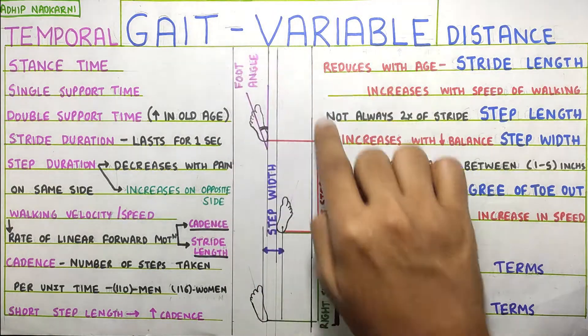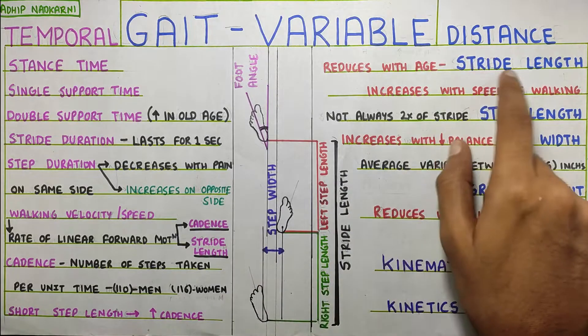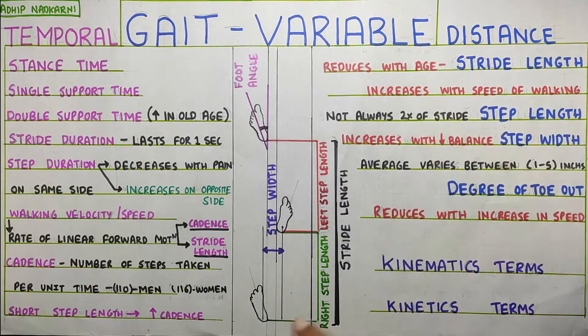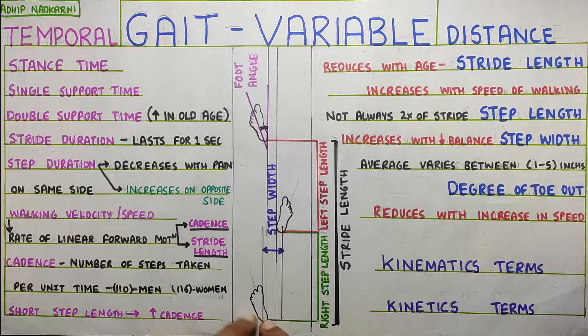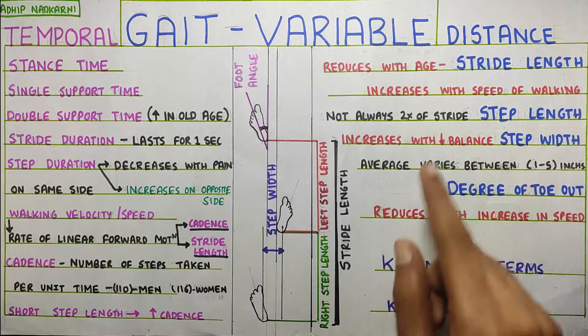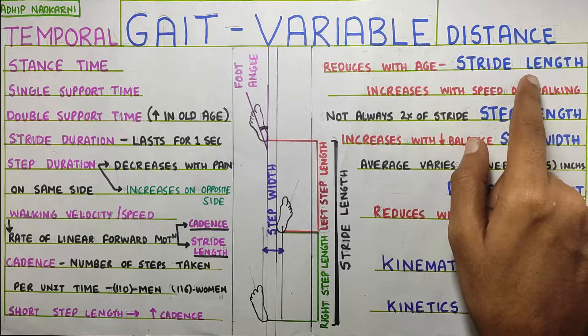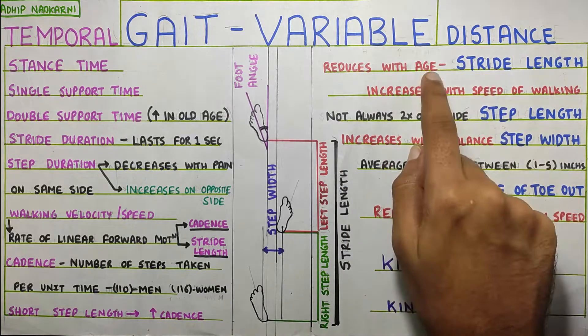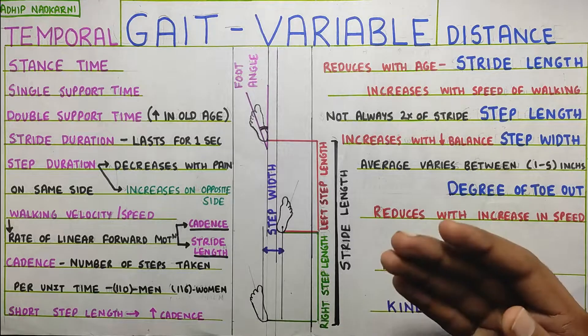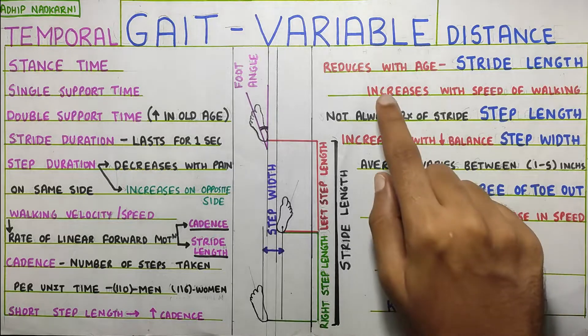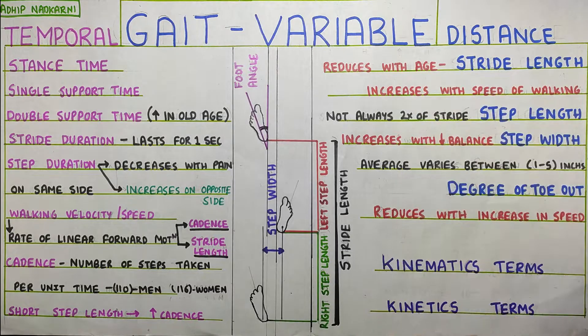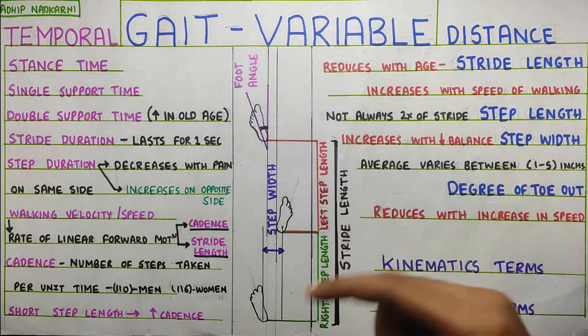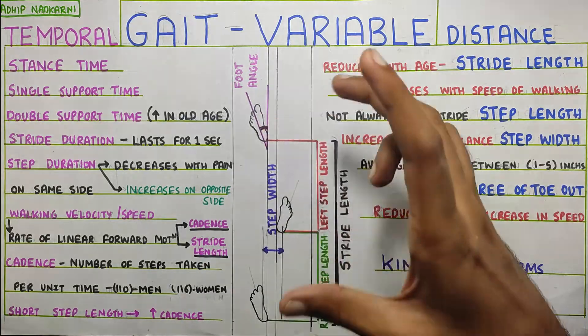So, under distance variables, everything is over here. First is the stride length. So, the stride length is basically distance from the heel strike of the left foot to the heel strike of the left foot again. So, this is the stride length and this reduces with age because your balance will reduce. So, you will take smaller steps and it increases with speed of walking. Because you have to cover more length, you will start taking bigger steps. And this will increase your overall stride length.